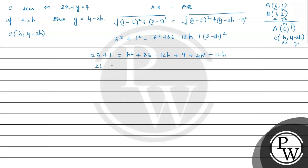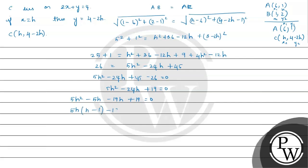Simplifying gives 26 = 5h² − 24h + 45. Rearranging gives 5h² − 24h + 19 = 0. Factorizing: 5h(h − 1) − 19(h − 1) = 0, so (5h − 19)(h − 1) = 0. From this we get h = 19/5 or h = 1.